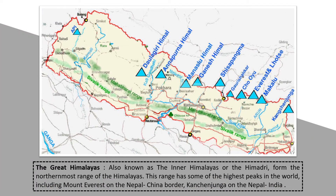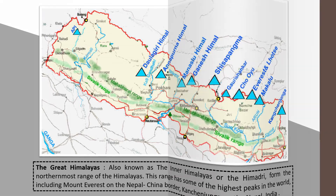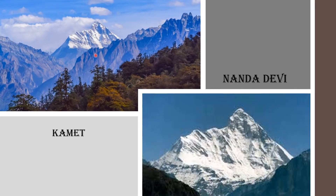The Great Himalayas, also known as the Inner Himalayas or the Himadri, form the northernmost range and contain some of the highest peaks in the world. These include Mount Everest on the Nepal-China border, Kanchenjunga on the Nepal-India border, and several other very high peaks such as Makalu, Annapurna, Dhaulagiri, Nanda Devi, Kamet, and others.